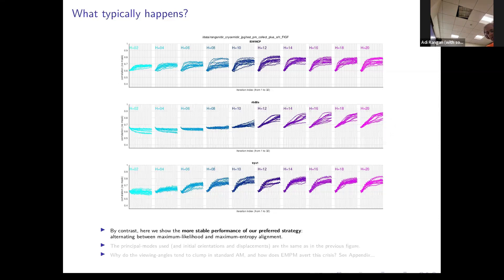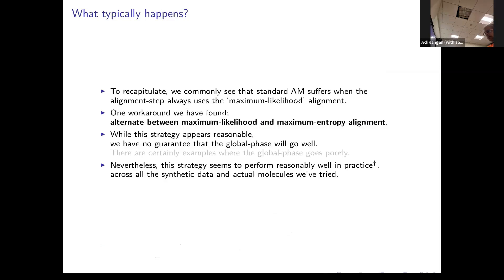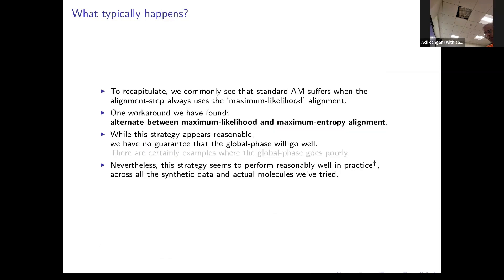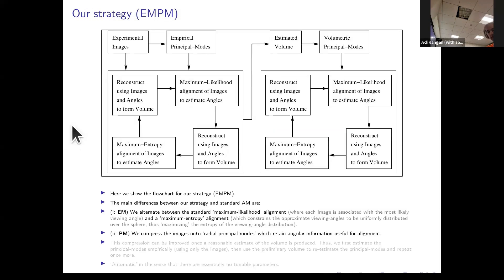I do have some insight into why this heuristic works, though I don't have a guarantee that it's going to work well — there are always going to be pathological situations where it doesn't. But it does perform well in practice across all the synthetic data and actual molecules I tried. If I have a little time at the end, I can show some simpler case studies where the behavior of this heuristic can be analyzed.